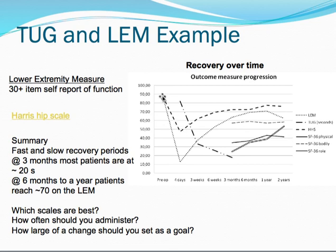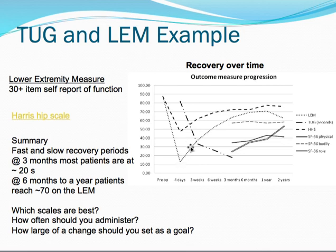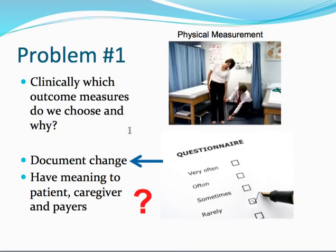So essentially, if we were trying to document change — especially small increments of change in people post-hip fracture — we would be much better off to use the Lower Extremity Measure than the Harris-HIP score. Both of these scales capture the construct of function, because they're asking about functional abilities and patient self-report. But we're also interested in how these scales perform in terms of helping us pick up change clinically, because that's the point of an outcome measure. We want outcome measures that are more responsive, or better able to document change.